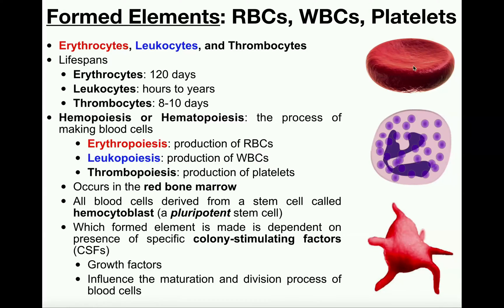All three classes of these cells are formed through a process called hemopoiesis or hematopoiesis — these mean the same thing, and the terms alternate depending on the textbook. This is just a term for the process of making blood cells, and it occurs in the red bone marrow. So all three cell types are made in the red bone marrow.